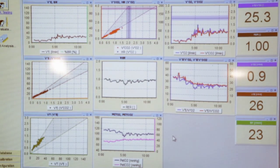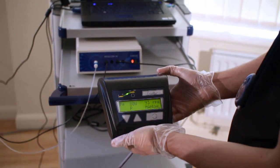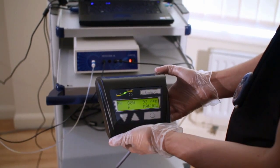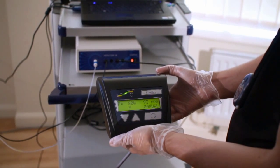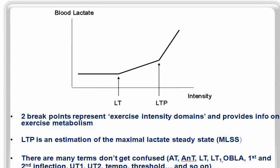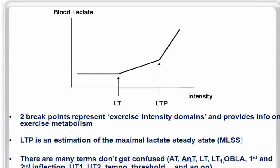Hence, an athlete may choose to train at heart rate values above those associated with the lactate threshold in order to improve the lactate threshold. This results in a classic rightward shift of the lactate profile curve.